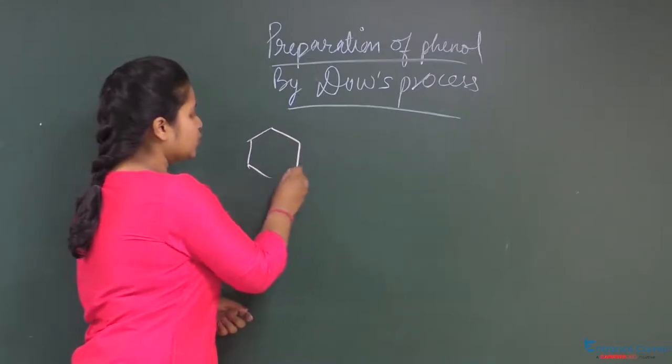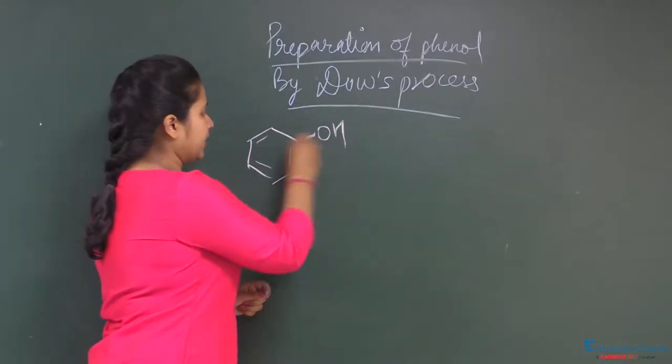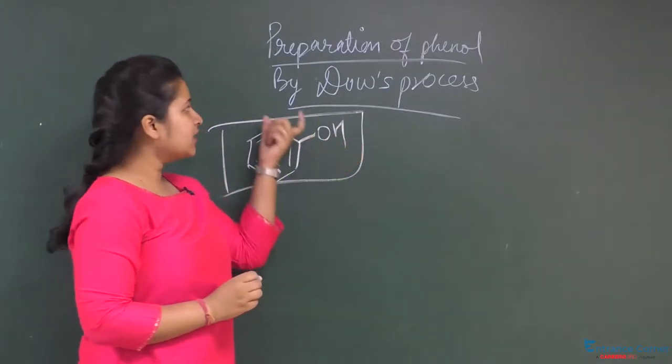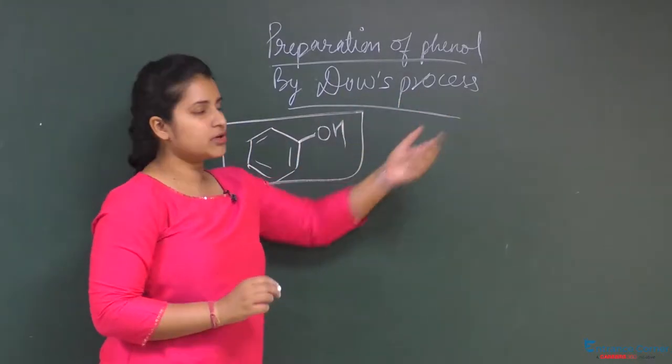Phenol is when the hydroxyl group is attached to a benzene ring. That is, one of the hydrogen atoms is replaced by a hydroxyl group. This is called benzene. Now we have to prepare this by Dow's process.